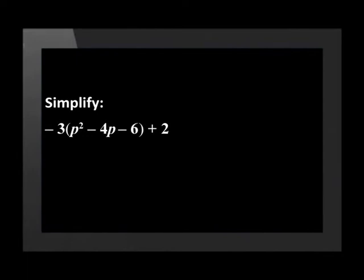There are three terms within the brackets, but the brackets hold them together, keeping them as 1. Again, in this example, only the negative 3 is next to the bracket and needs to be distributed. Negative 3 times p squared is negative 3p squared. Negative 3 times minus 4p is plus 12p. And negative 3 times minus 6 is plus 18. The 2 is not multiplied by negative 3 because it is a separate term.